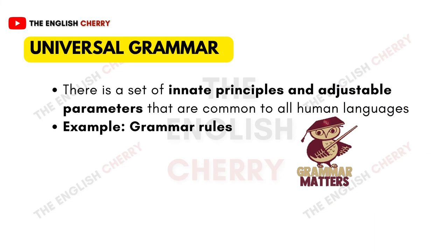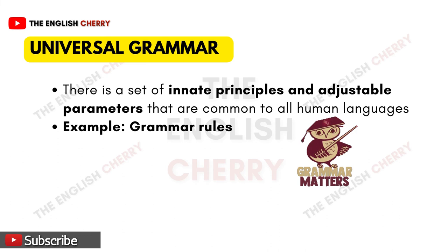Noam Chomsky discusses the concept of universal grammar in detail. According to it, there are a set of innate principles and adjustable parameters that are common to all human languages — human languages are constructed on the same abstract template, and this explains why all normal speakers acquire their native language quickly. For example, there are grammatical concepts present in almost all languages with slight differences, and these grammatical rules guide us to acquire language in the proper direction. The presence of universal grammar allows children to deduce the structure of their native language from mere exposure.